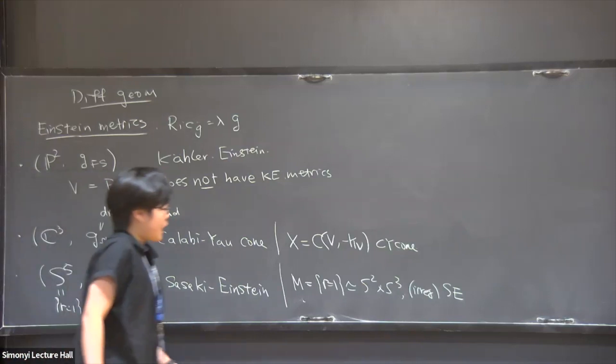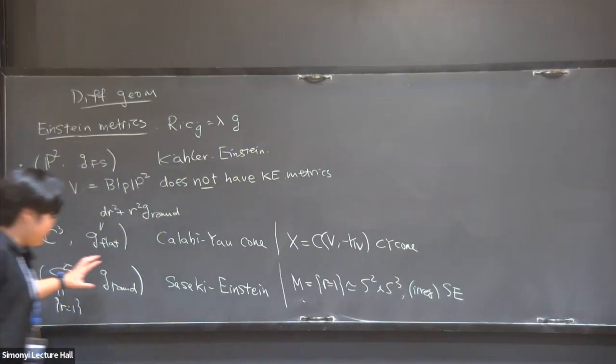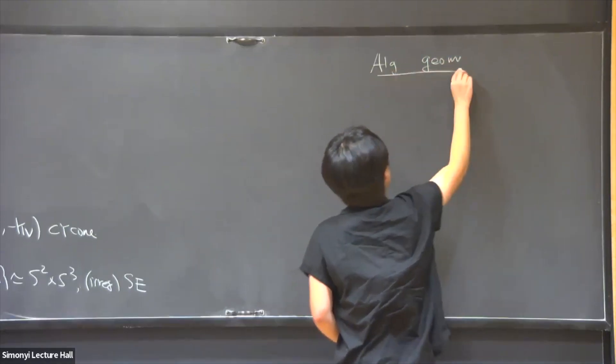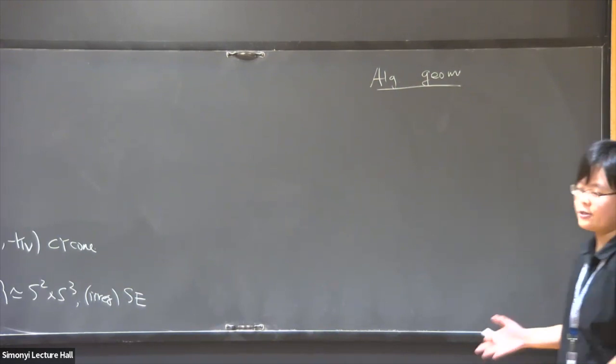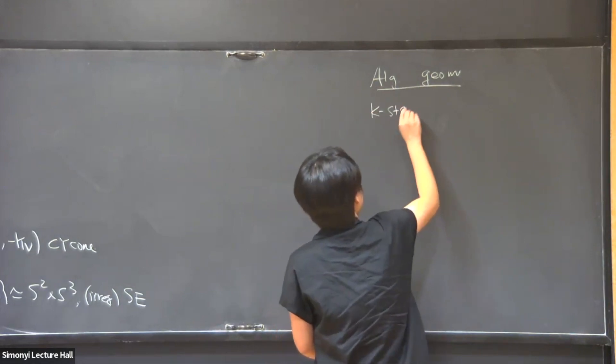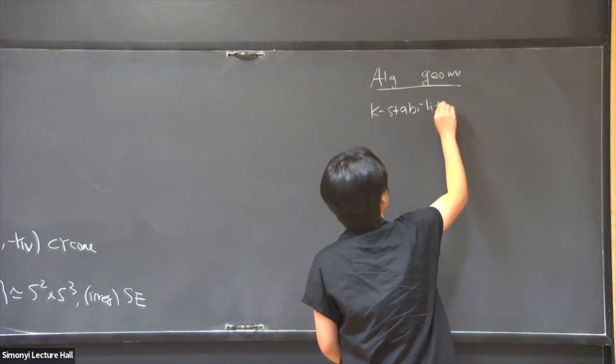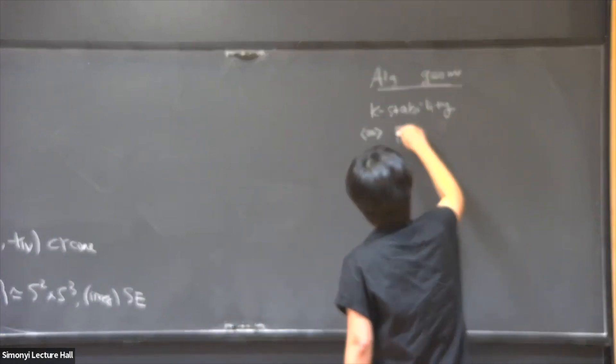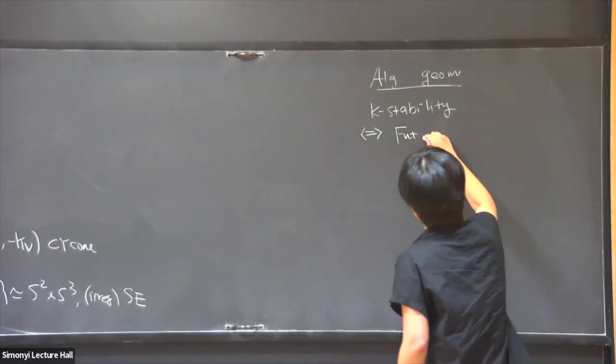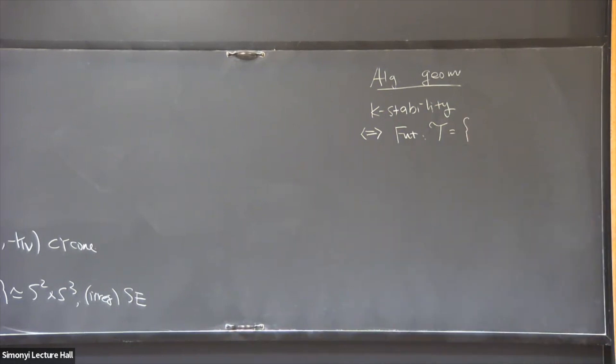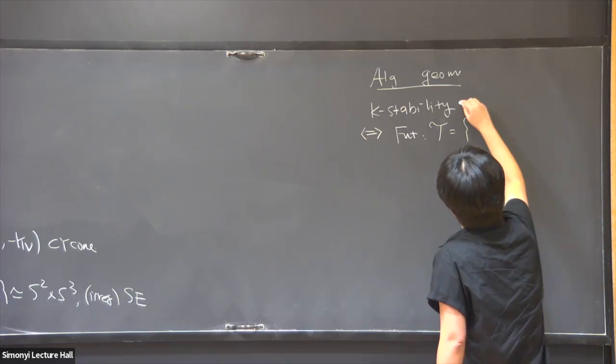So what does this have to do with the algebraic theory of K-stability? This often goes under the name of Yau-Tian-Donaldson conjecture. And by now, it's completely understood for Fano varieties, even for the singular ones. And this is governed by the notion of K-stability.